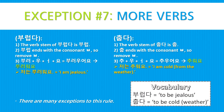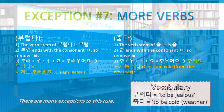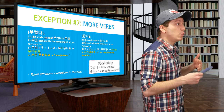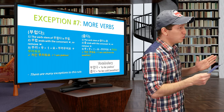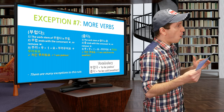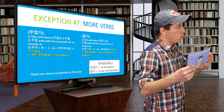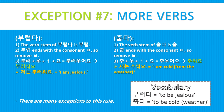More examples of this ㅂ exception: 부럽다 (to be jealous) — verb stem is 부럽, remove ㅂ, attach 우: 부러우, then 어: 부러워, then 요: 부러워요. Sentence: 저는 부러워요 — I am jealous. And 춥다 (to be cold, as in weather) — verb stem is 춥, remove ㅂ, leaving 추. Attach 우: 추우, then 어 combined: 추워, then 요: 추워요. Sentence: 저는 추워요 — I am cold. Note: some verbs are exceptions to this rule and conjugate the standard way instead.